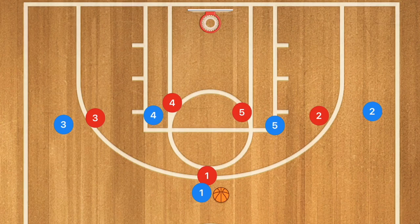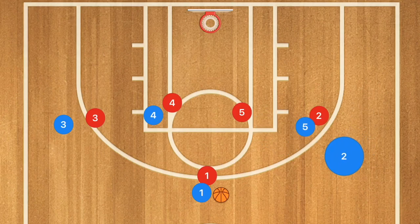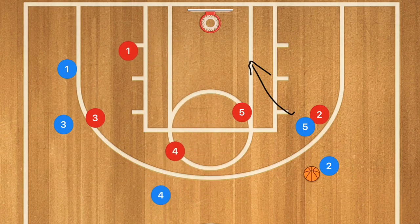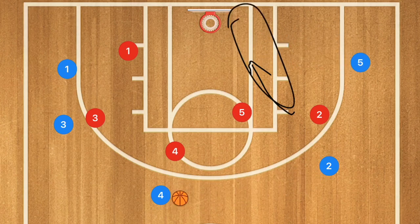That's the basics of the offense. Now let's throw some defense in and see how this offense works against man-to-man defense, but also some different zone defenses as well. Starting with man-to-man: player five sets a screen and player two pops up, and player one passes to player two. Player five rolls off the screen, player one cuts through and pops up, and player three sets a screen down for player one.